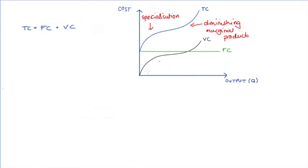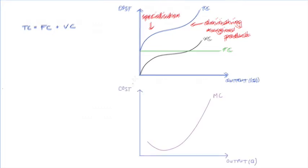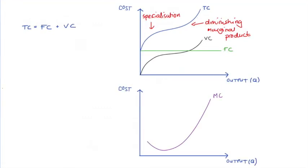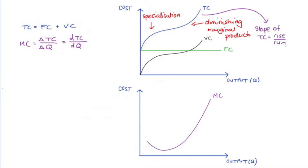Understanding the slope of our total cost function really helps us understand our other curves. Marginal cost is actually equal to the slope of the total cost curve. You can see this clearly by noting that marginal cost equals the change in total cost divided by the change in quantity — or the derivative of total cost with respect to Q. These ratios are the same as the slope of our total cost curve: rise over run, which tracks the change in total costs divided by the change in quantity. So the slope of total costs equals marginal cost.